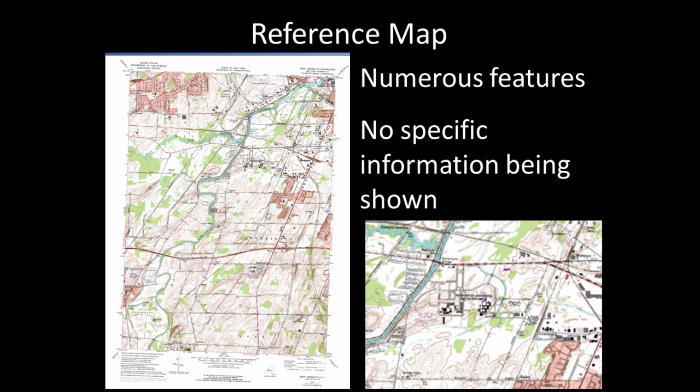As a hypothetical example, if a new water line was going to be added to this area, the USGS map could serve as the base map for showing where the water line would go.